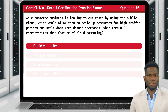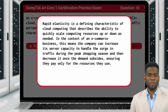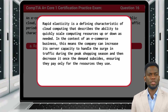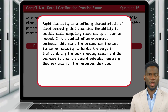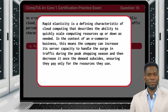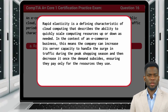The answer is A: Rapid Elasticity. Rapid elasticity is a defining characteristic of cloud computing that describes the ability to quickly scale computing resources up or down as needed. In the context of an e-commerce business, this means the company can increase its server capacity to handle the surge in traffic during the peak shopping season and then decrease it once the demand subsides, ensuring they pay only for the resources they use.